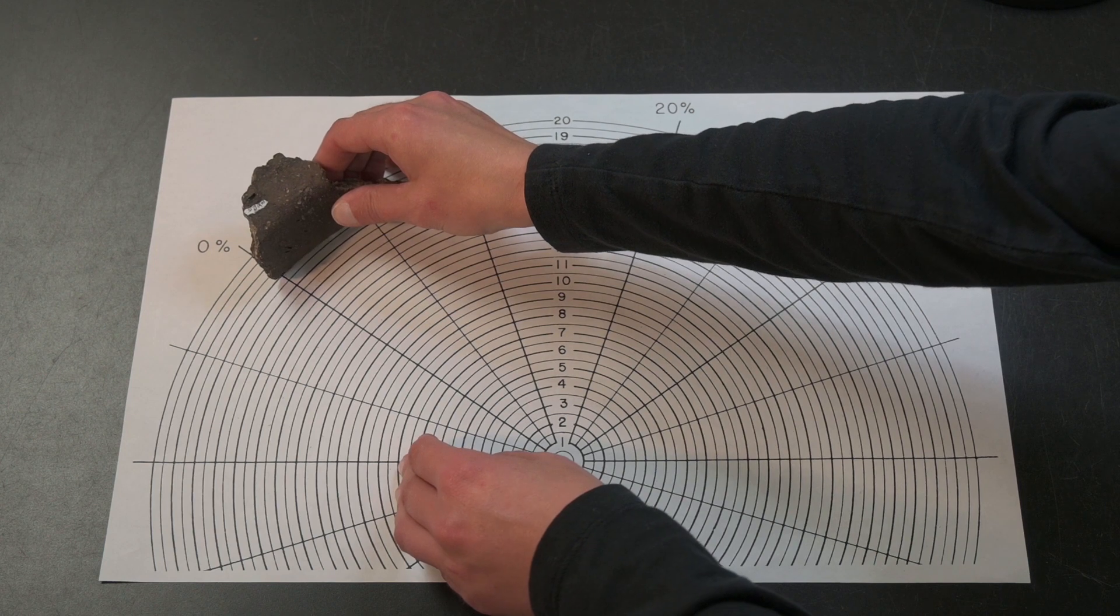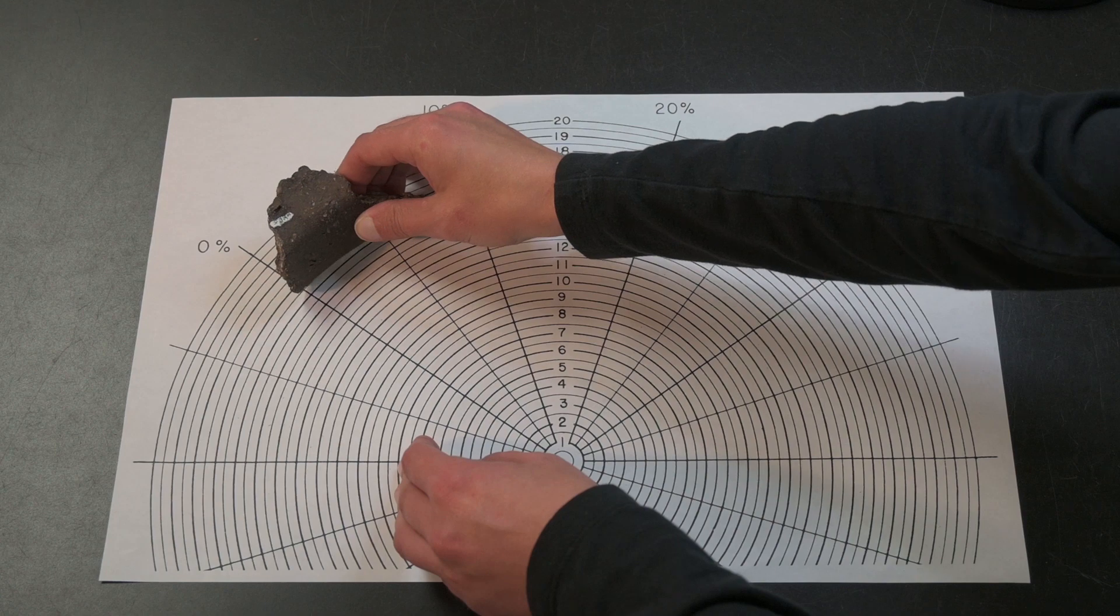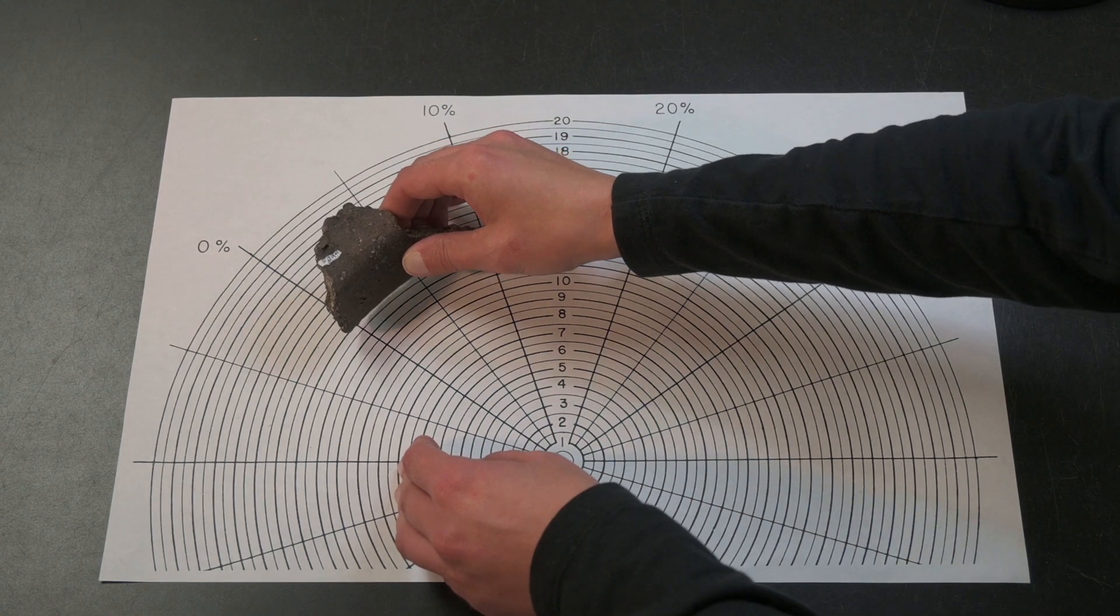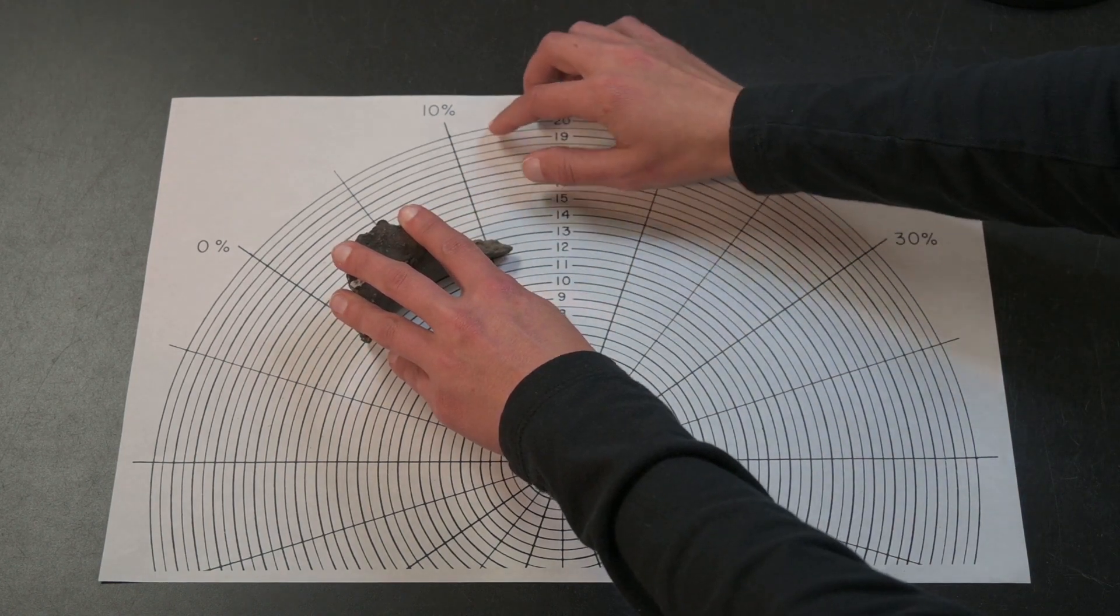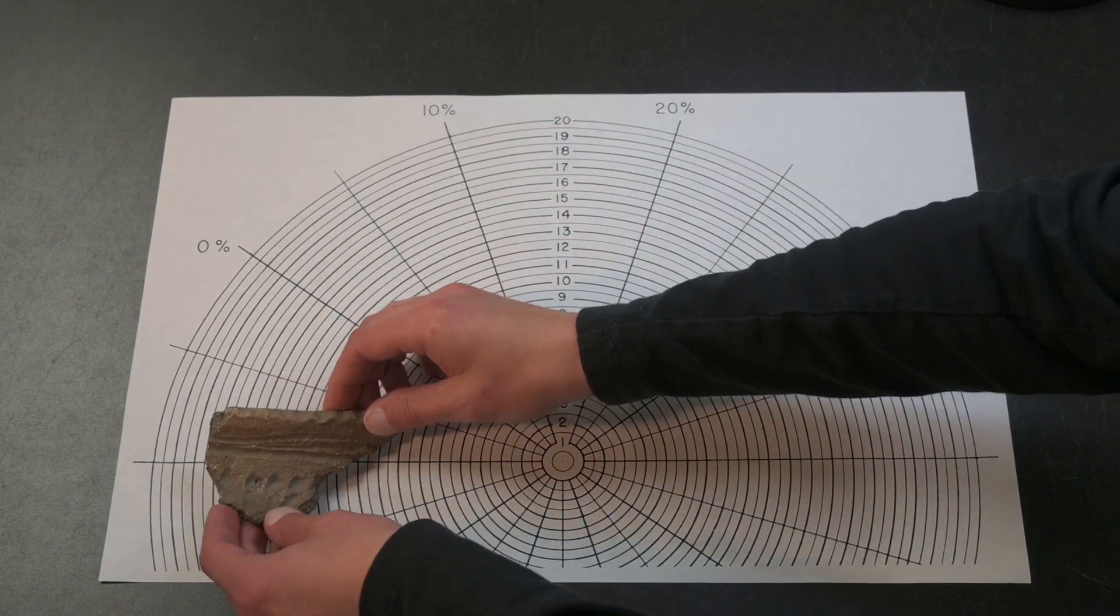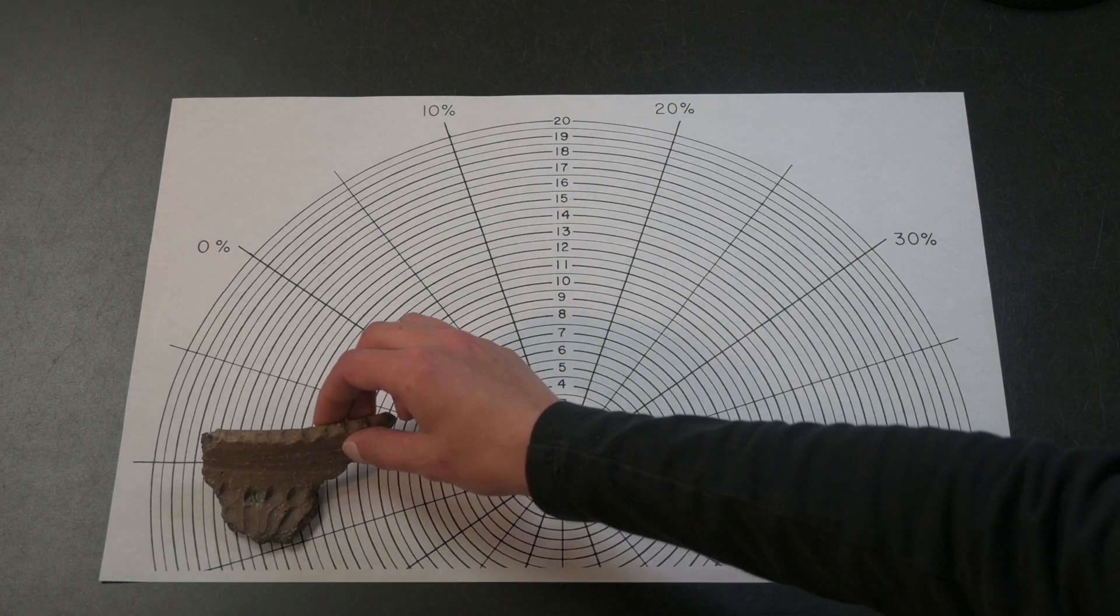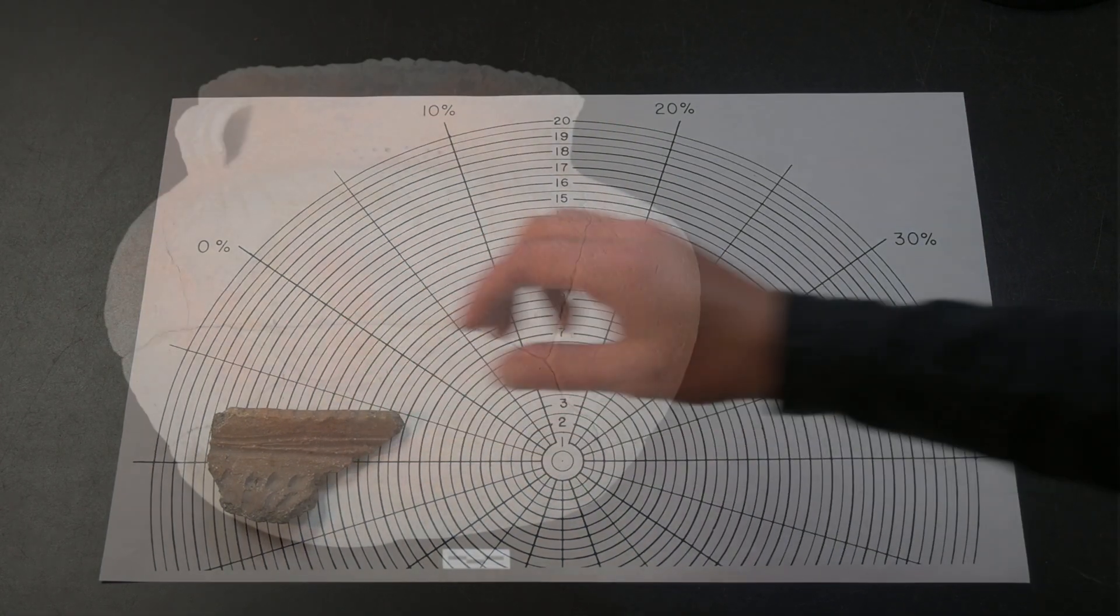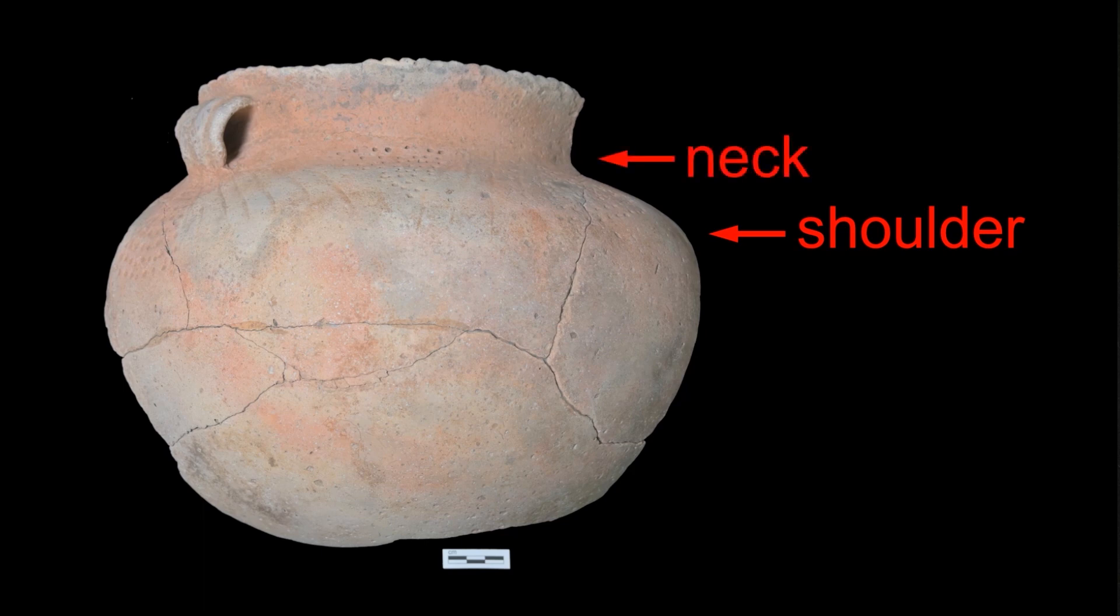Line up the sherd with the rim beginning at zero percent, and match it with the best fitting radius line to estimate the percent of the rim present. While we are primarily concerned with rim measurements taken at the lip of the vessel, we can measure other parts of the vessel with a circular cross-section too, such as the shoulder, where the vessel is widest, the neck, where it's narrowest, and the base.